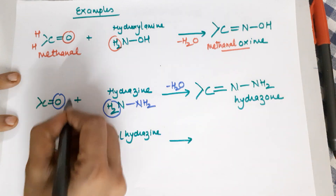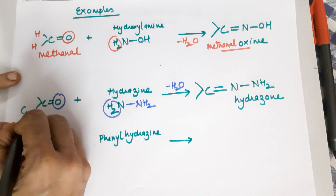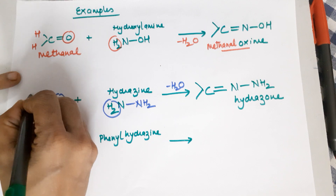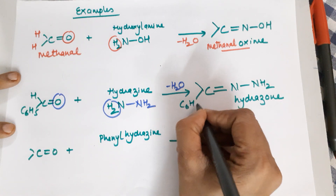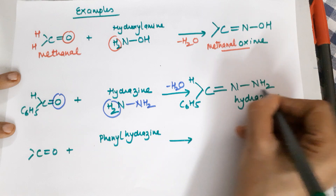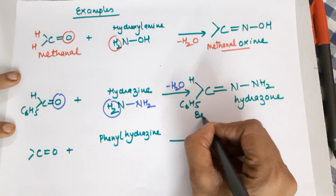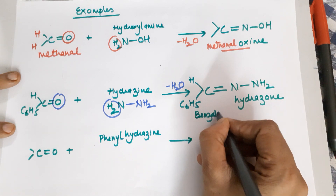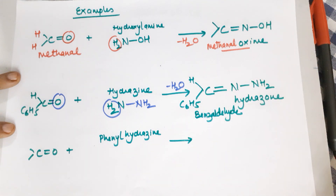For example, if I started with benzaldehyde (C6H5-CHO), my end product would be named benzaldehyde hydrazone.